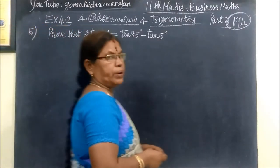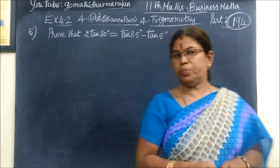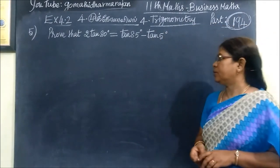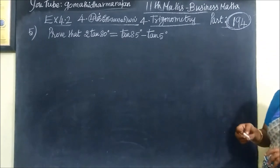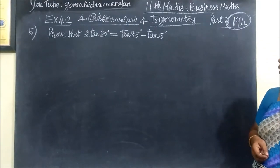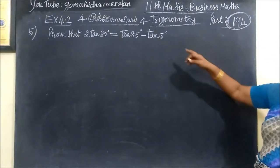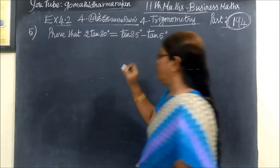Here are students, now we have to talk about question number 4.2, exercise 4.2, question number 5. Prove that 2 tan 80° equals tan 85° minus tan 5°. What is the answer?